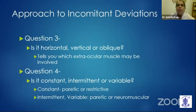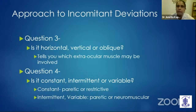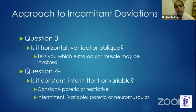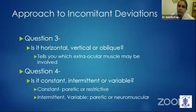For patients with incomitant deviation, we have to answer questions three and four: is the diplopia horizontal, vertical, or oblique? This gives us a clue to which extraocular muscles are involved. Secondly, is it constant, intermittent, or variable? This is a clue to the etiology. If it's constant, it's a paretic or restrictive cause. If it's intermittent or variable, it might be a neuromuscular problem like myasthenia gravis.